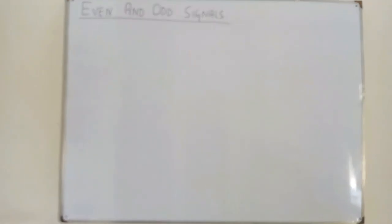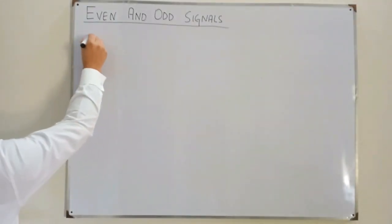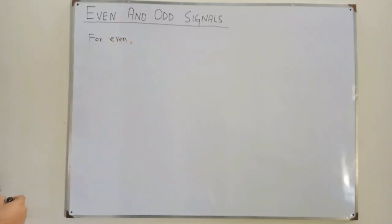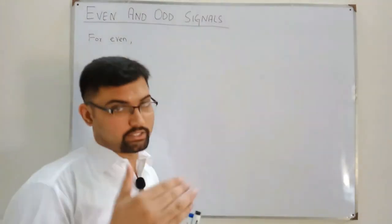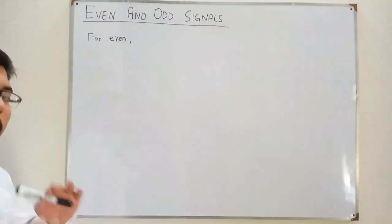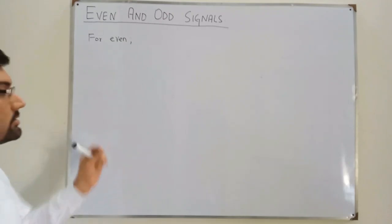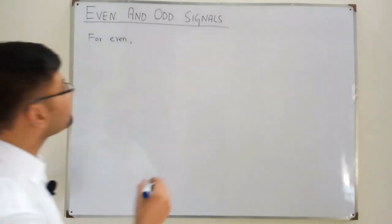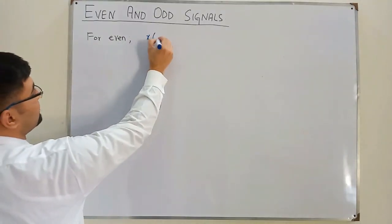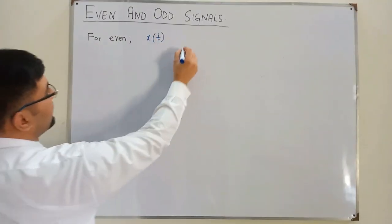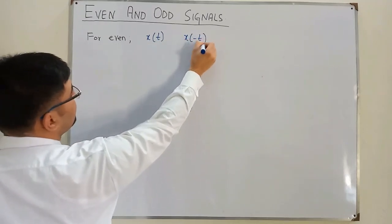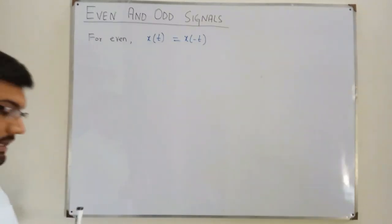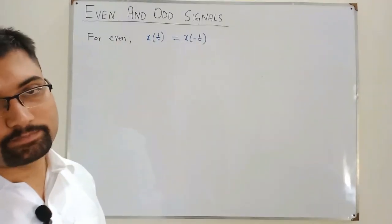For a signal to be even, the basic criteria is based on time reversal. If you time reverse a signal and it is equal to the original signal, such a signal is called an even signal. So if x(t) is the original signal and x(-t) is the time-reversed signal, these two are equal for the even case.